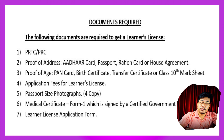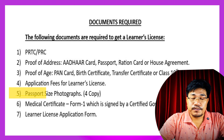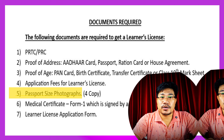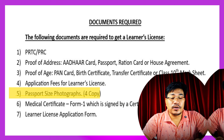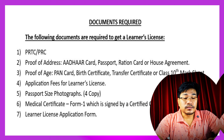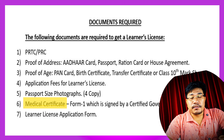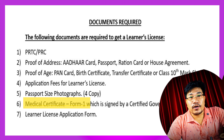The following documents are required to get a learner's license. Number one, PRTC. Number two, Proof of Address.